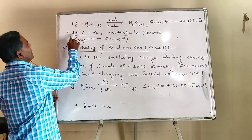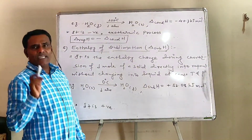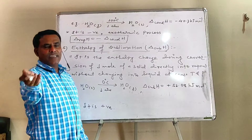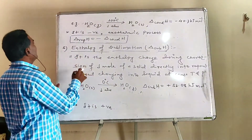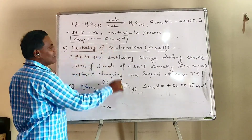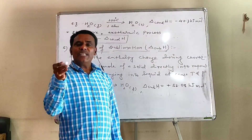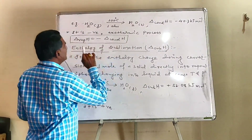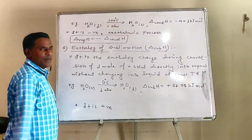Remember, enthalpy of condensation will always be negative because condensation is an exothermic process — heat is liberated. So it is negative. For the same substance under similar pressure-temperature conditions, enthalpy of vaporization and enthalpy of condensation are equal in magnitude but opposite in sign.